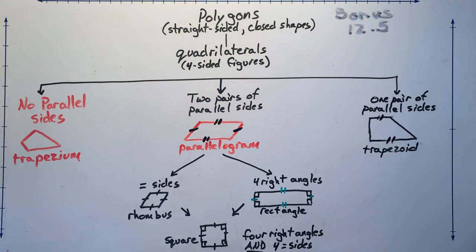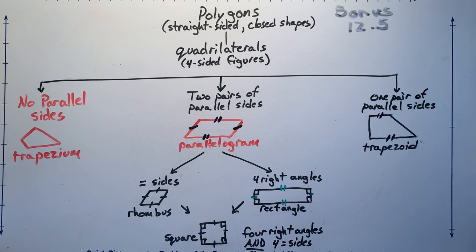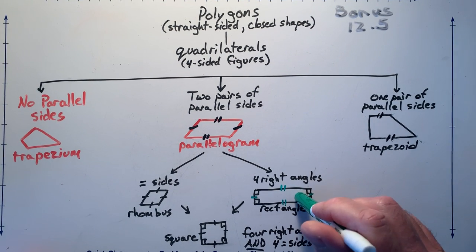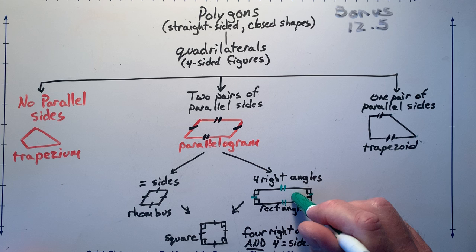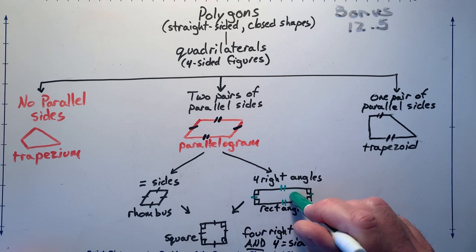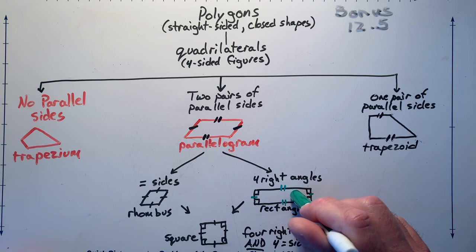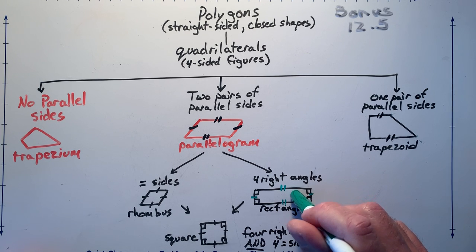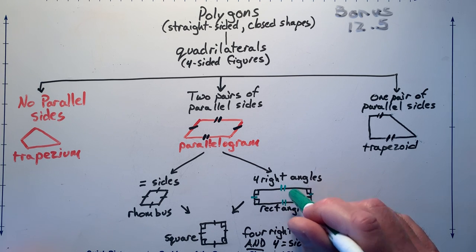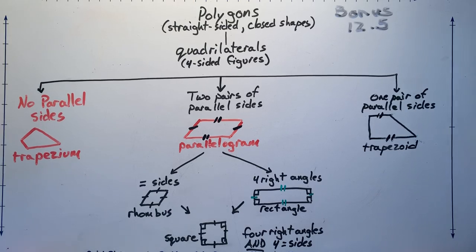So in other words, this shape right here is a rectangle, it's a parallelogram, it's a quadrilateral, and it's a polygon. It's all four things in one shape.